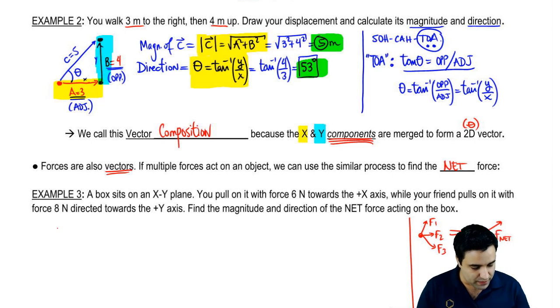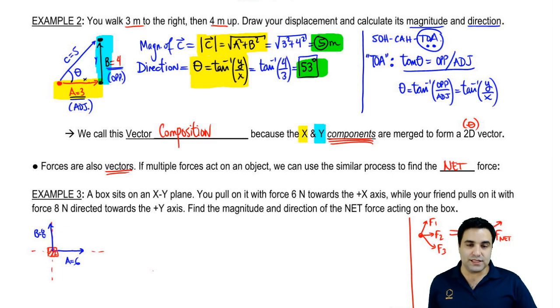So a box sits in an x-y plane. Draw an x-y plane. Here's our little box. And you're pulling it with a force of 6 towards the x. So this is you. I'm going to call this A equals 6. And then your friend pulls on it with a force of 8 towards the y. So this is B equals 8. I'm actually going to write this over here. B equals 8. Now, which way would you expect this force, the net force, to be? Or if this box was moving, which way would you imagine that the box would move? You'd probably imagine the box moves somewhere in this direction. And you can actually figure this out exactly by redrawing this.